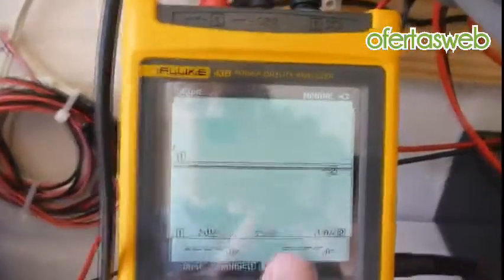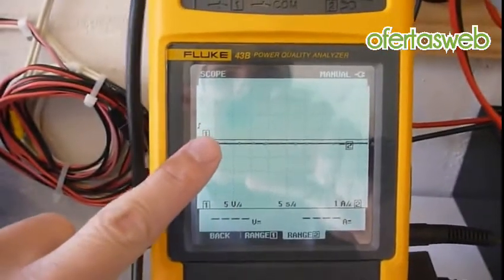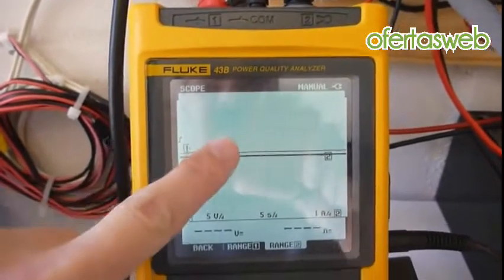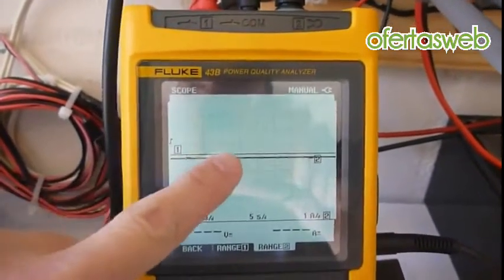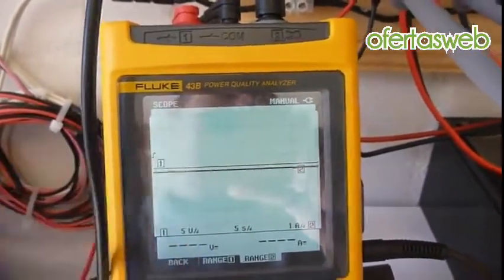I've got my Fluke 43B acting as an oscilloscope. It's monitoring both current and voltage. It's nice to get a graphic representation because when the MPPT algorithm does its thing, you can actually see what's going on here and get a little idea.